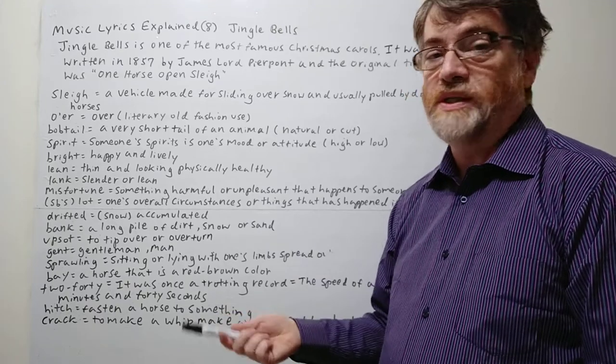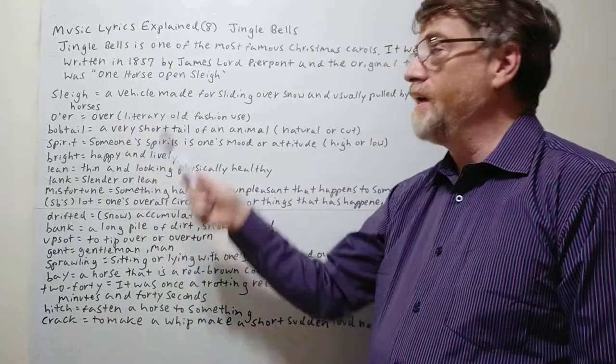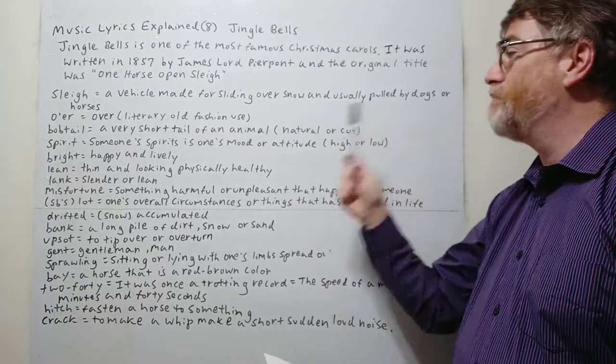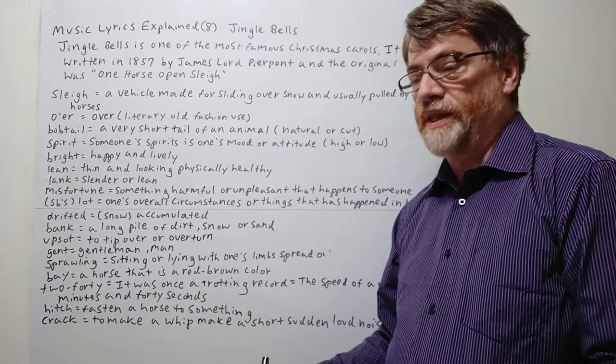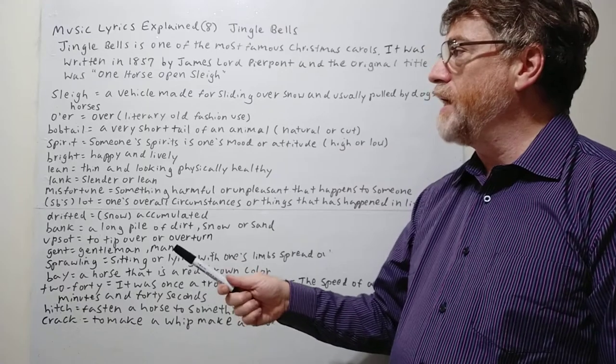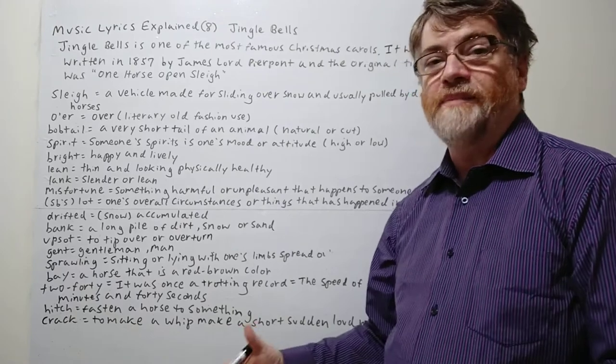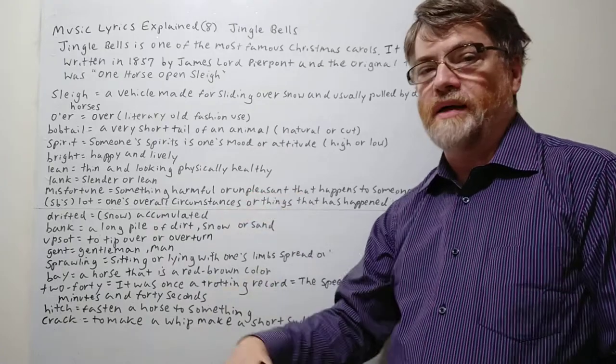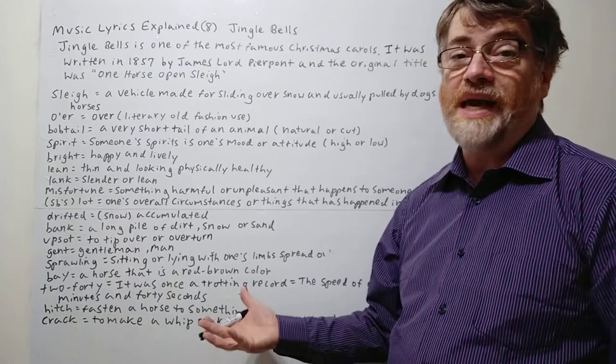Let's take a look at some of the vocabulary here. A sleigh is a vehicle made for sliding over snow, usually pulled by dogs or horses. It's usually a lot larger than a sled. It's probably one you could sit on or possibly stand on. An open sleigh means there's no roof or cover.